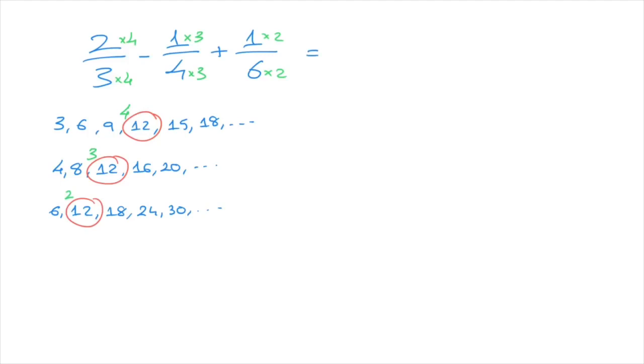So calculating all of that leads to, well for the first fraction that's 2 times 4, which is 8, over 3 times 4, which is 12. So we have 8 over 12 minus the second fraction, that's 1 times 3, which is 3, over 4 times 3, which is 12. So we have 3 over 12. Finally, we add to that the third fraction, which is 1 times 2, over 6 times 2. So that's 2 over 12.